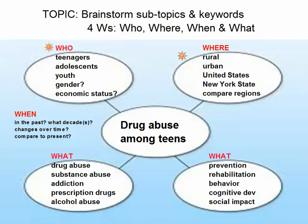The second W — where — is fairly straightforward but often overlooked. It asks: where geographically are you focusing? For drug abuse among teens, do you want to focus on teens all around the world, or narrow in on a specific country, state, or region? You might compare geographic regions, look at rural versus urban teens in the United States, or compare teenagers abusing drugs in California and New York to see if state laws are having an effect.